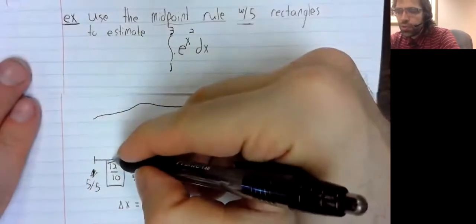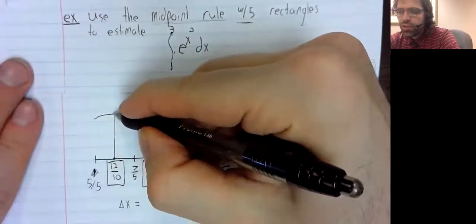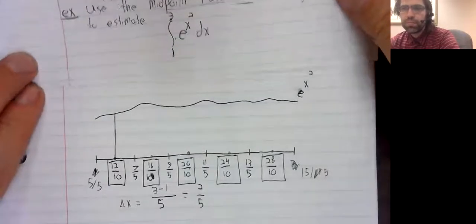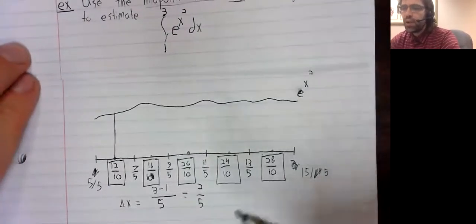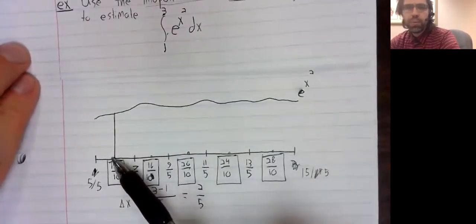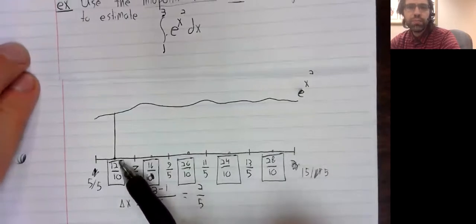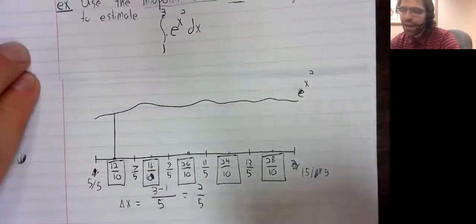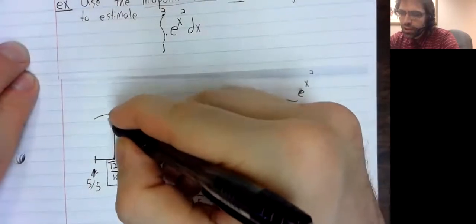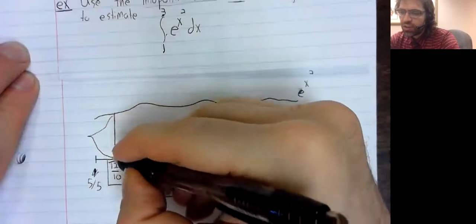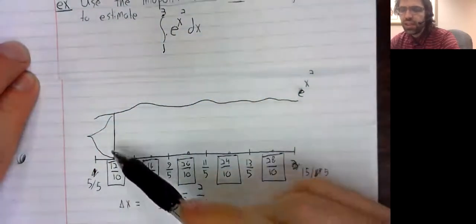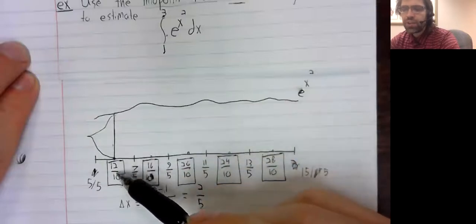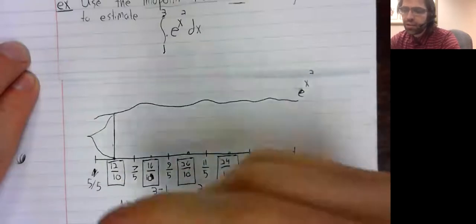And now we use each of these points to create a rectangle. We go from y equals zero to y equals e to the x squared. So, this distance is e to the x squared, where x is 12-tenths.